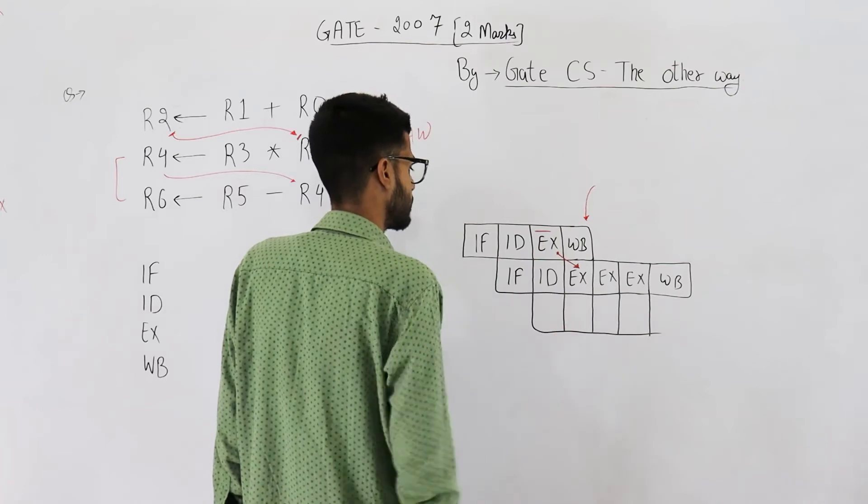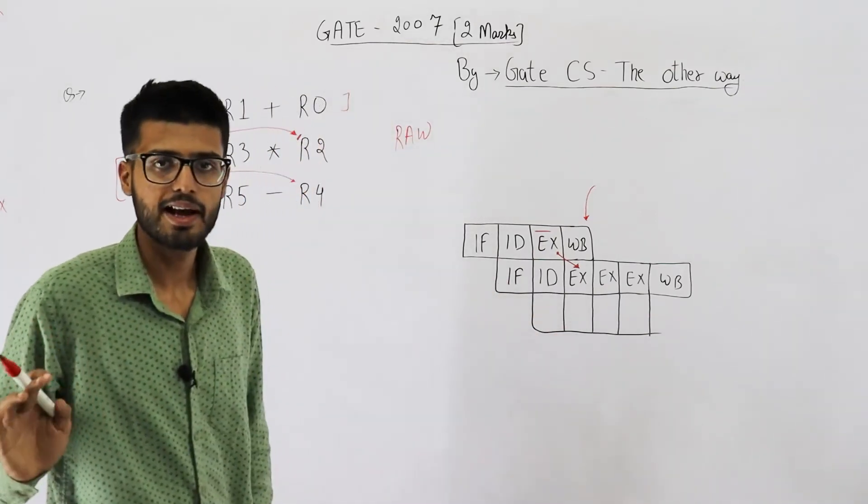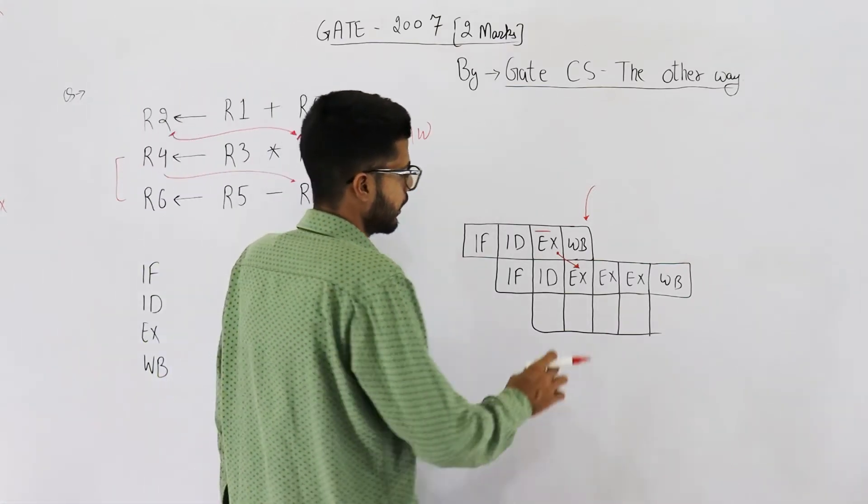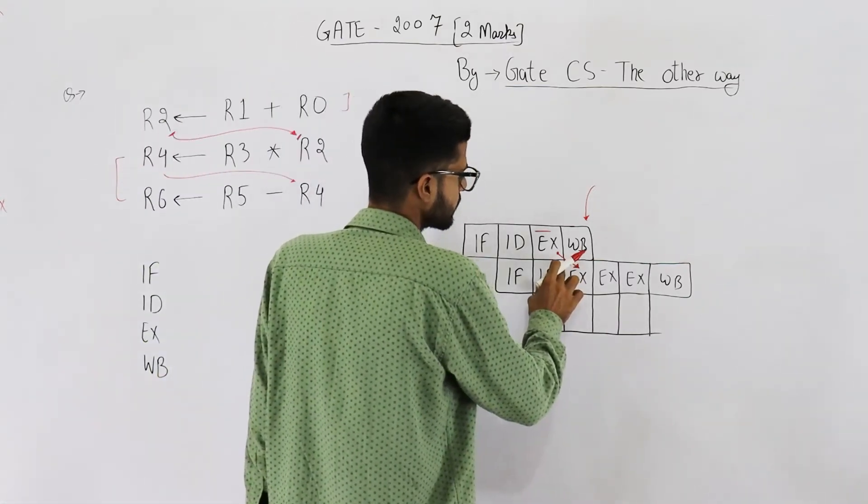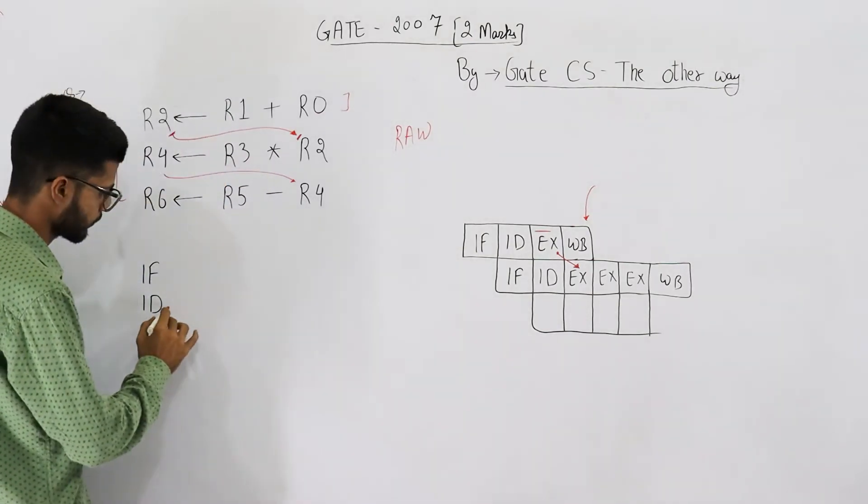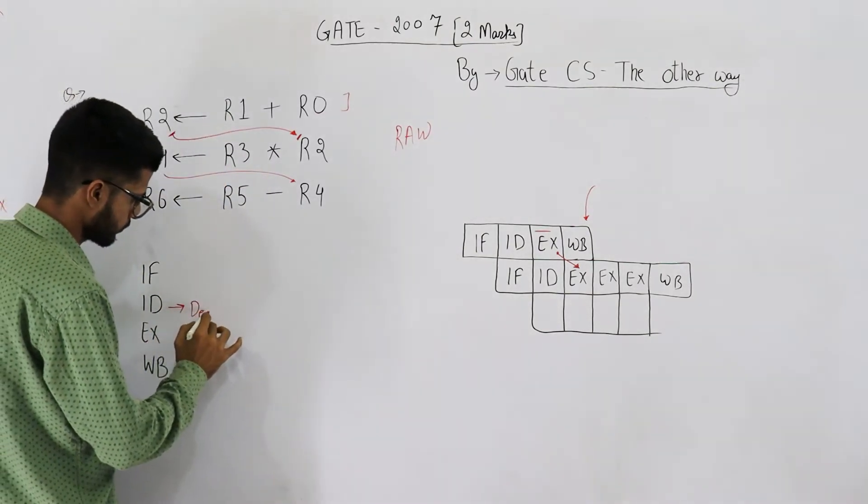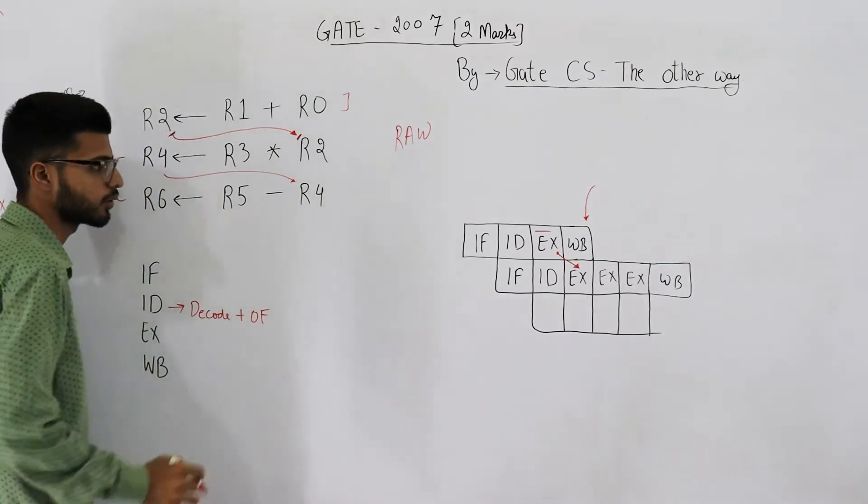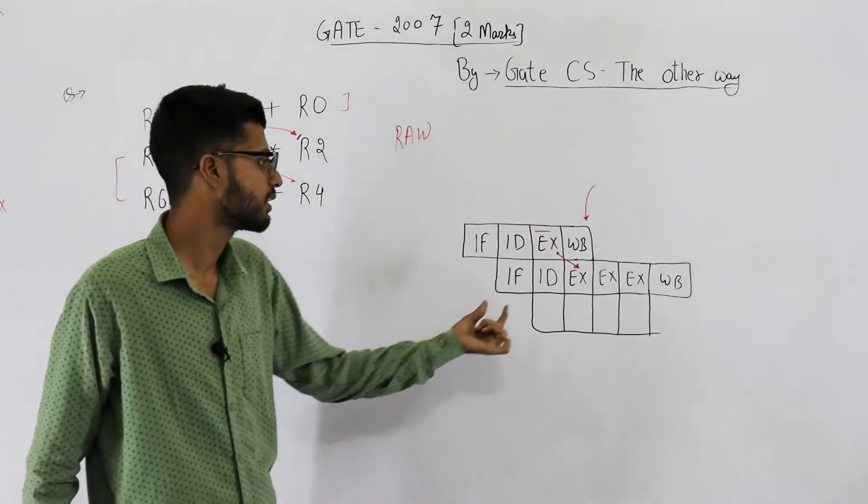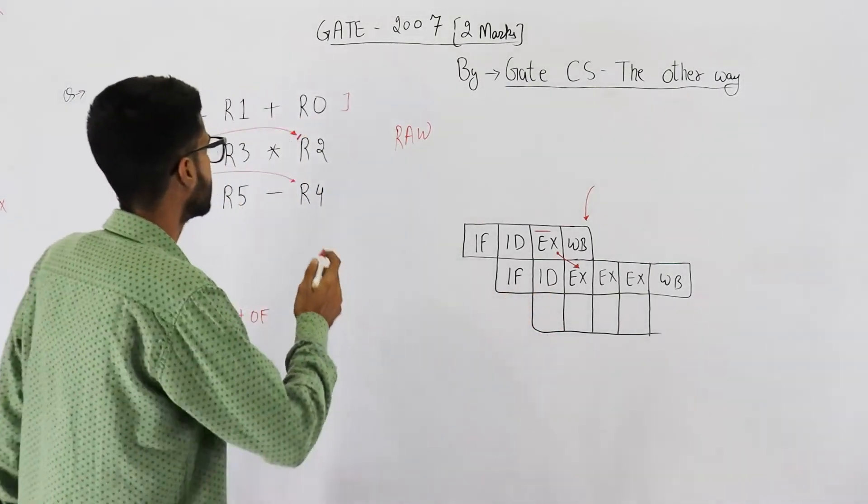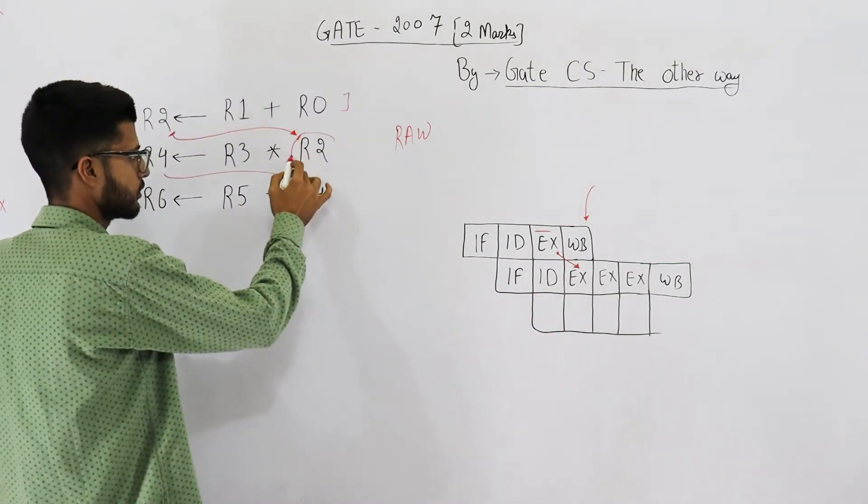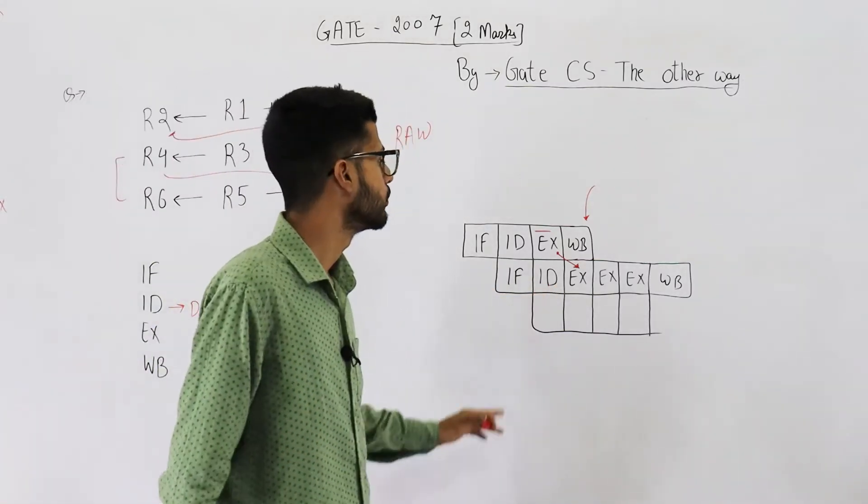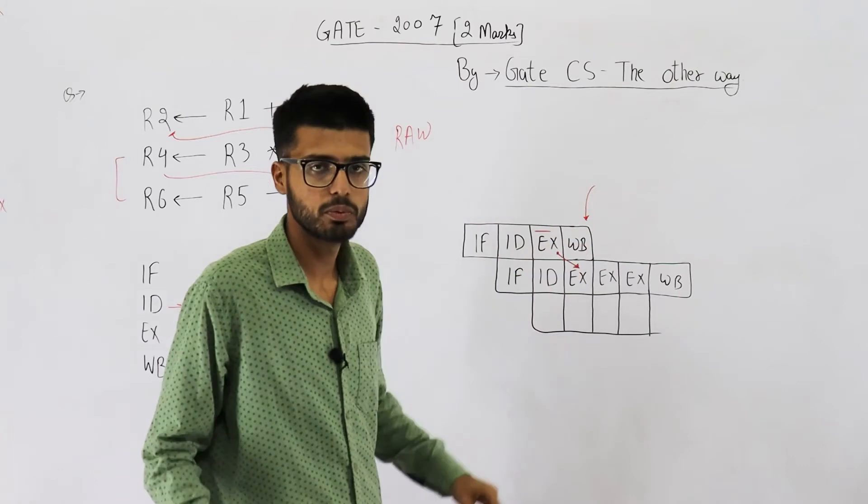Now they have just said operand forwarding is used, then you just consider best scenario. That means execute to execute, means try to avoid as many stall cycles as possible. And by the way, this ID phase, ID is for decode plus operand fetch, they have given it in the question.